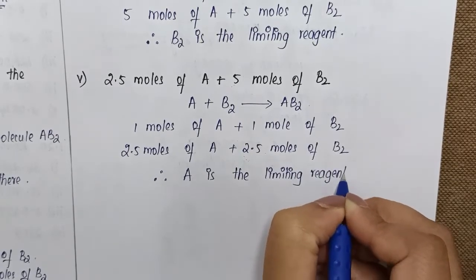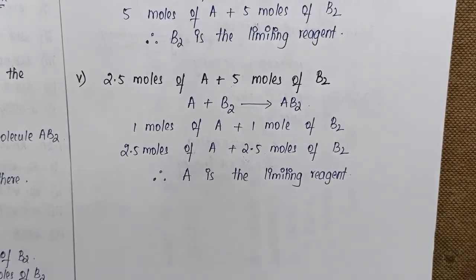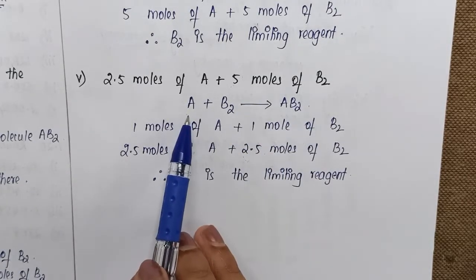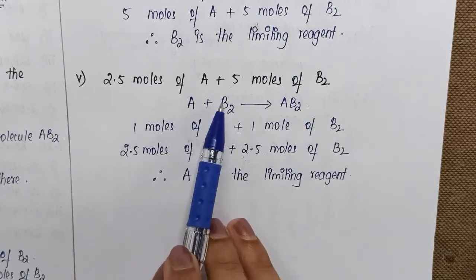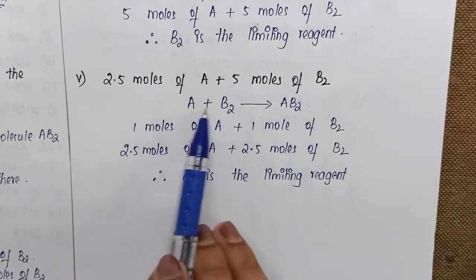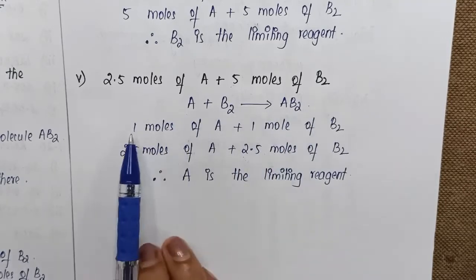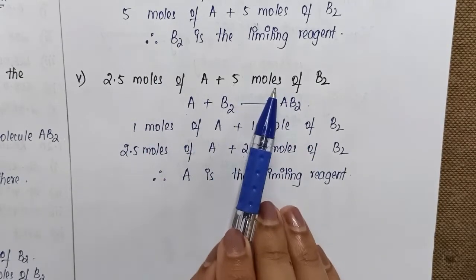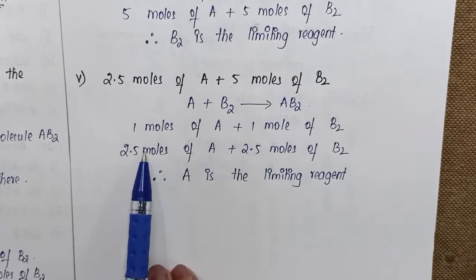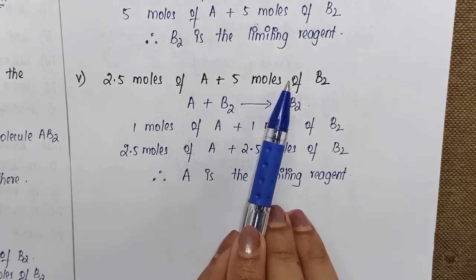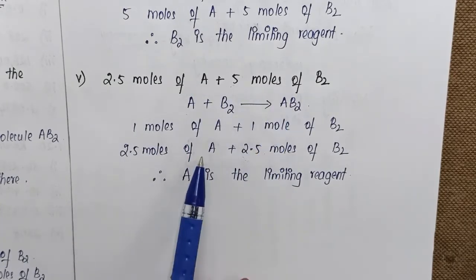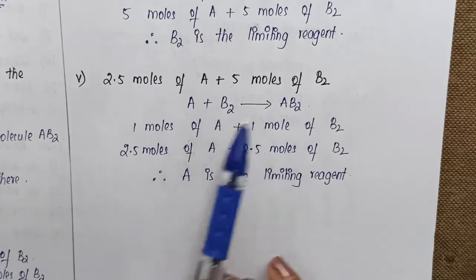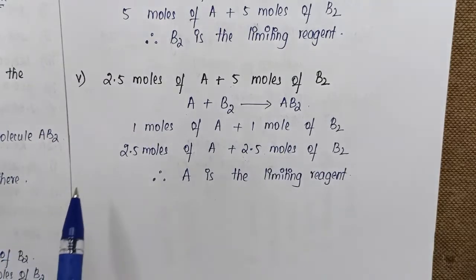In summary, when you have a general equation, first check the balancing of the equation, then write the relationships in terms of the parameters given, and compare with what is provided in the question. This makes it easy to identify which is the limiting reagent and which is the excess reagent.